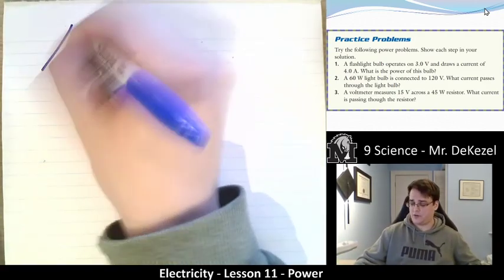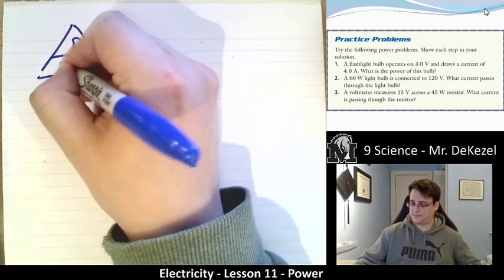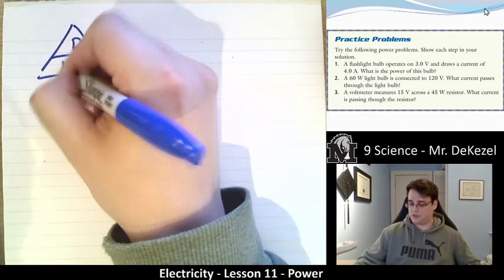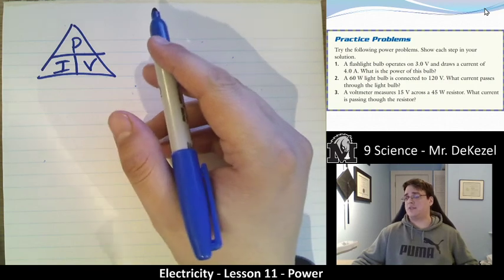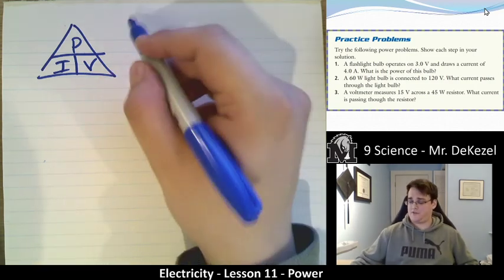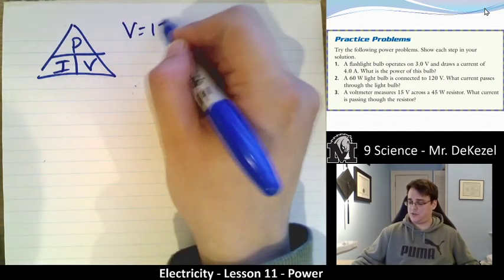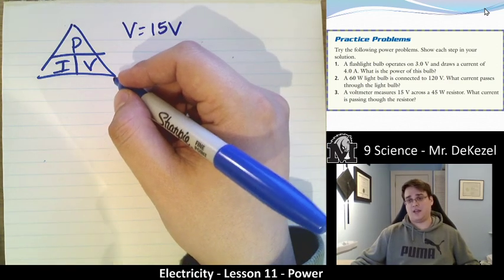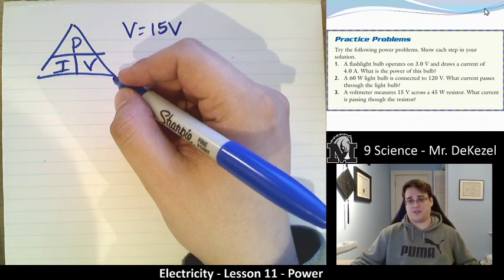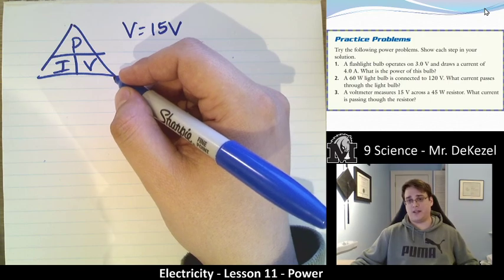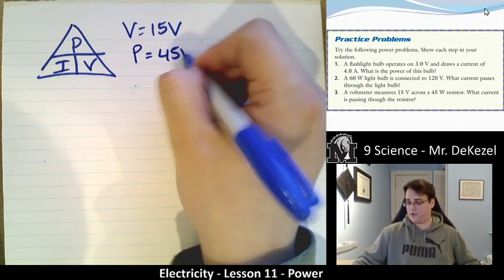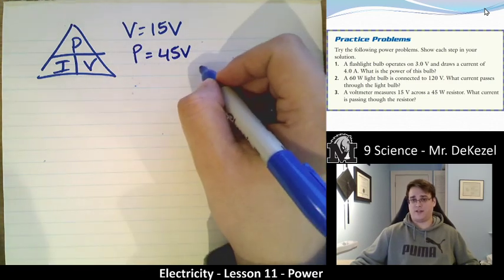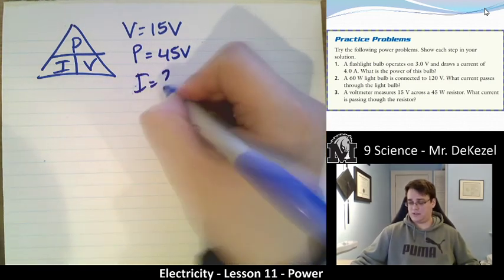Let's do this again. Draw our triangle one more time for practice. Current and voltage. I had to peak there. That's okay. In this question, the voltmeter measures 15 volts. So voltage is equal to 15 volts across a 45 watt resistor. So it's telling us what the power is through that resistor is equal to 45 watts. And we want to find out what the current is. Current is question mark.